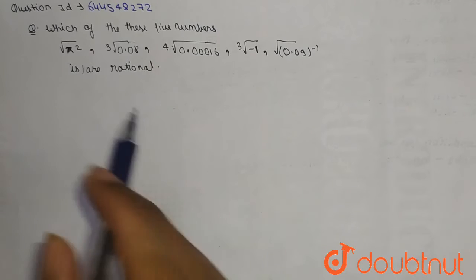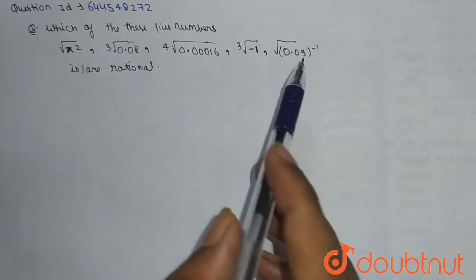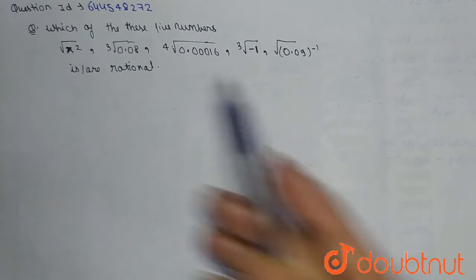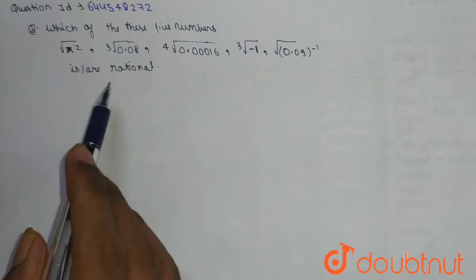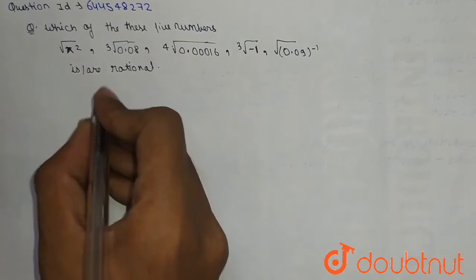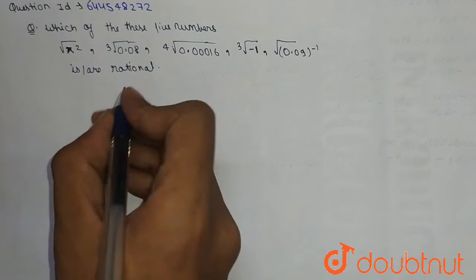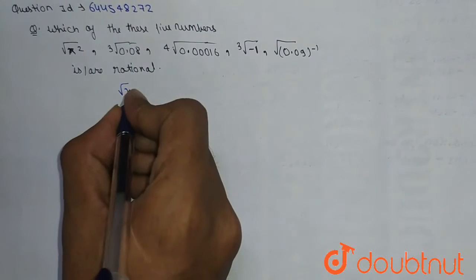Hello friends, our question is: which of these five numbers is rational? So our first number is the square root of pi squared.